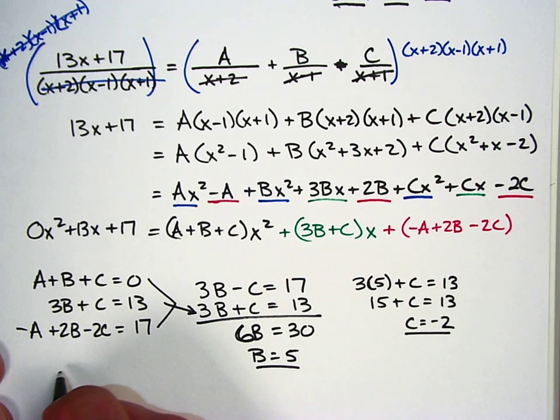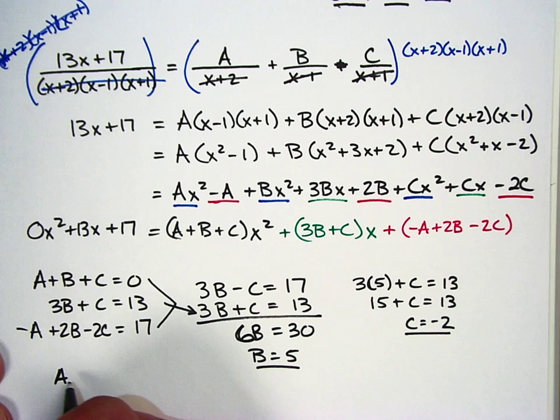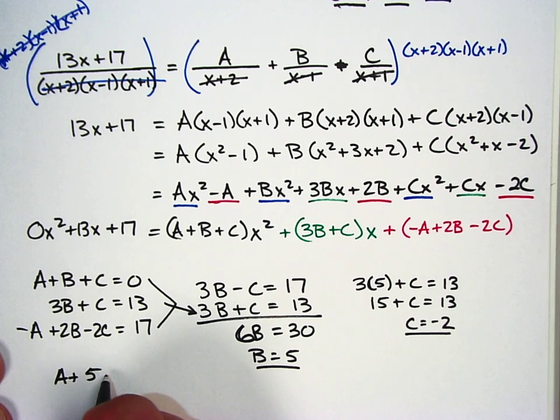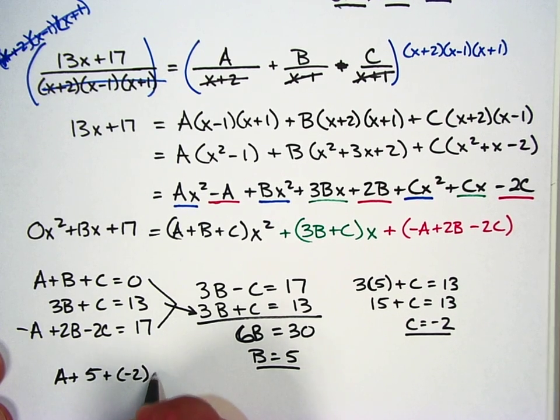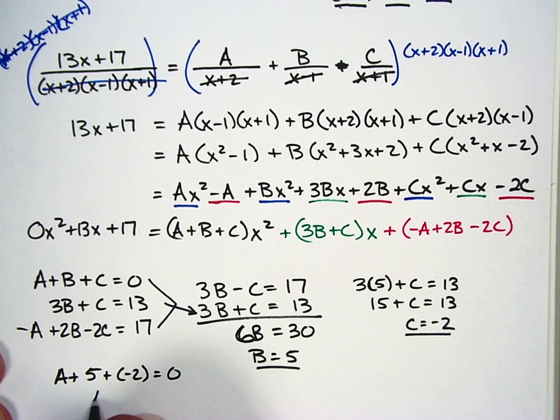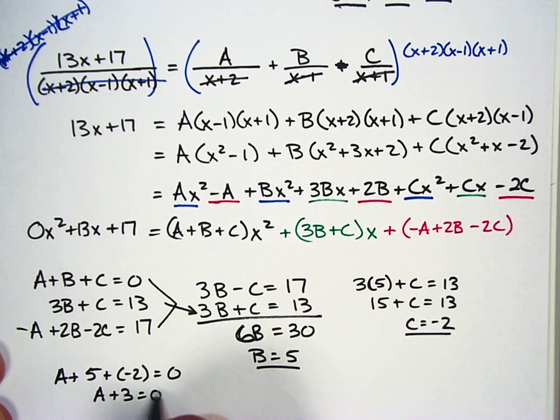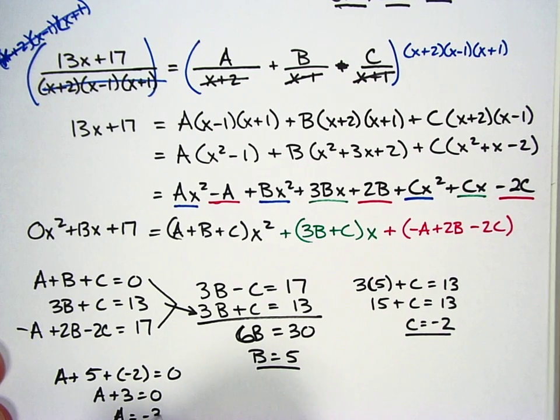Plug those all back in and we got A plus 5 plus negative 2 equals 0. A plus 3 equals 0. A equals negative 3.